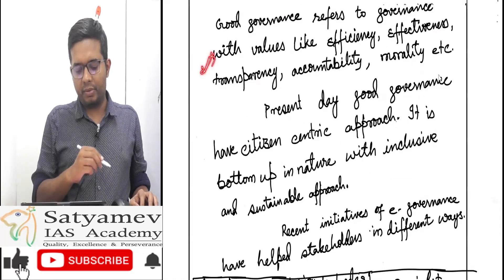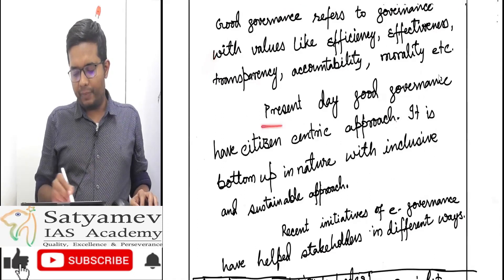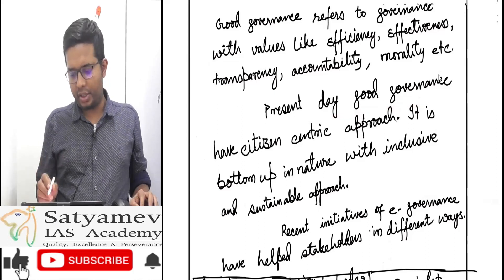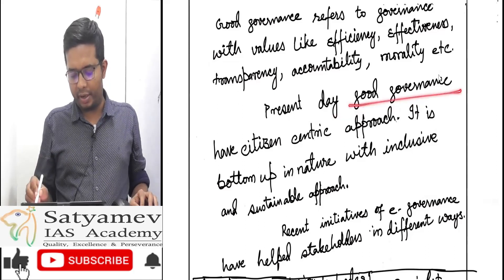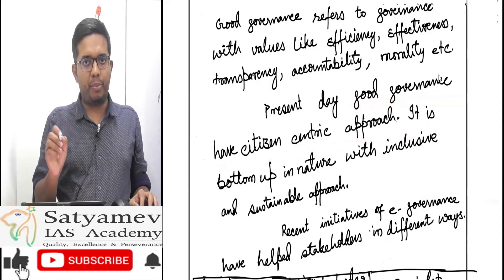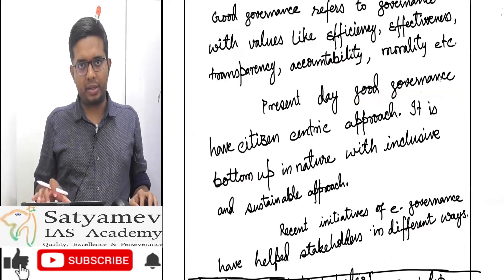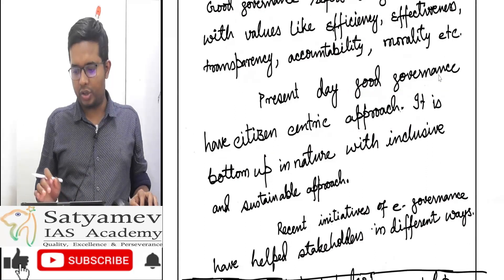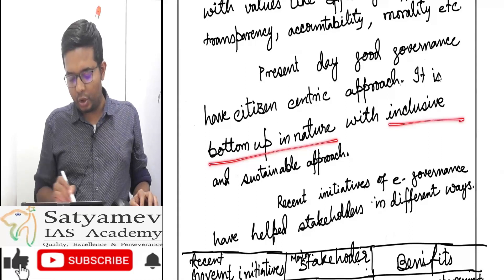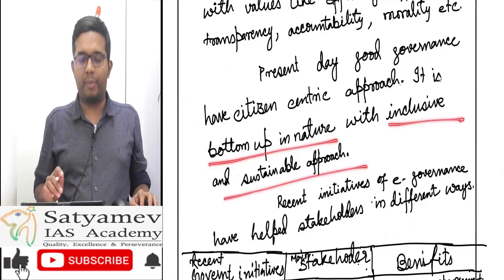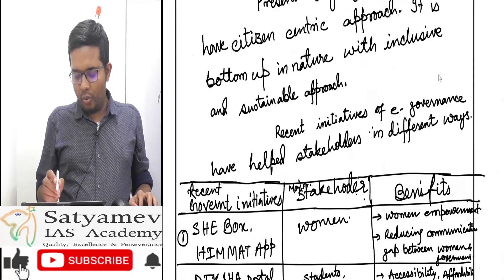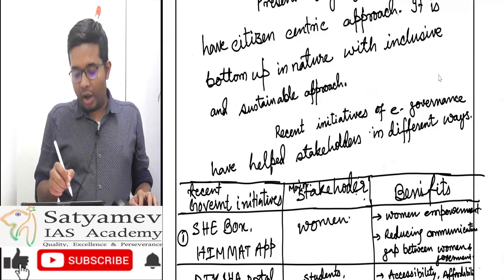This is the first step where we define good governance with its values, then bring it towards the present context. Present-day good governance has a citizen-centric approach — this is very important to understand. It is bottom-up in nature, with an inclusive and sustainable approach.